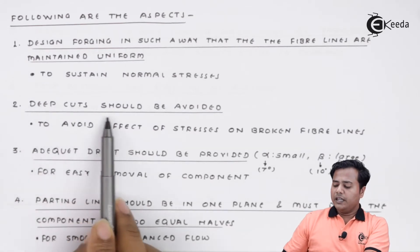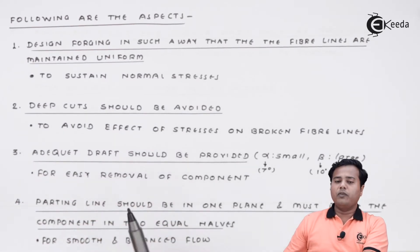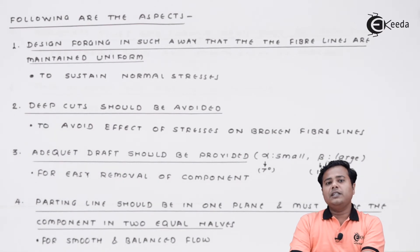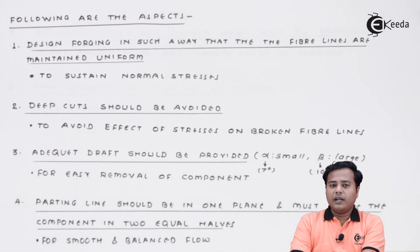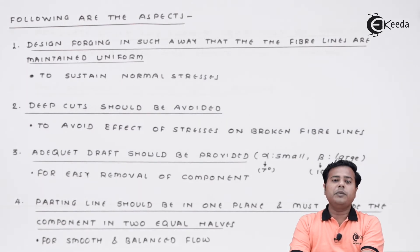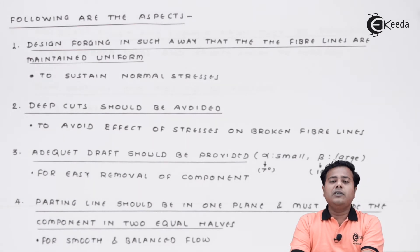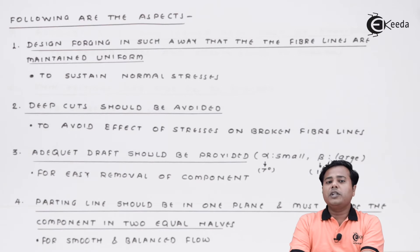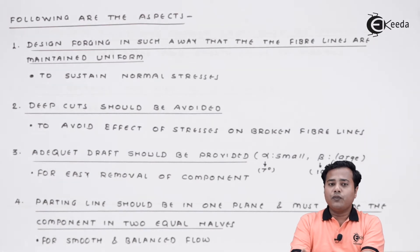The next thing is that deep cuts should be avoided. We have seen that in forging the fiber lines are maintained as they are. But if there is a deep cut, these fiber lines will be distorted or discontinued. As they are discontinued, their strength will be affected. That is why deep cuts should be avoided when a product is forged.